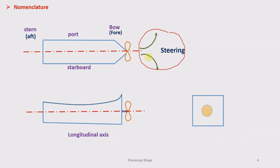Steering takes place in the top view. When the ship steers left or right, it changes the direction of the spin axis. That means while steering, the axis of rotation of the rotor — the spin axis — changes its direction, and hence gyroscopic torque is introduced during steering.